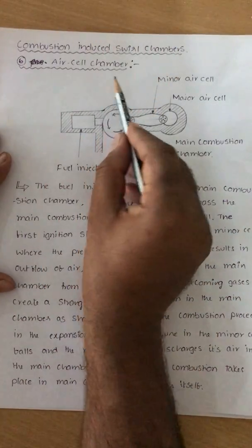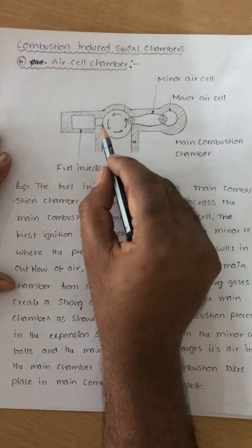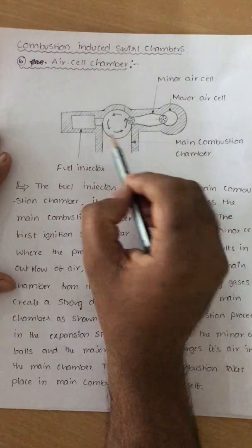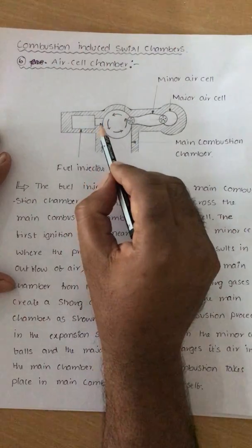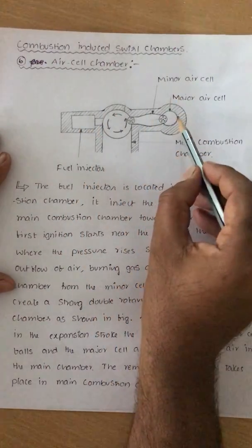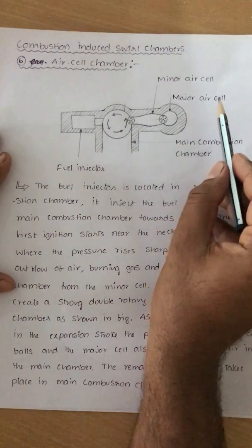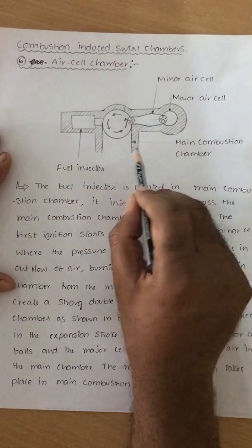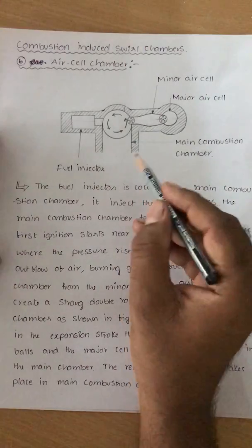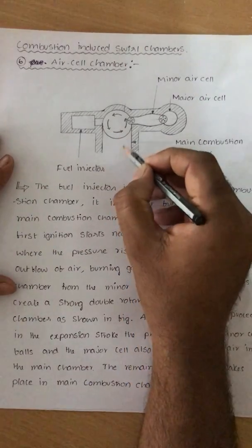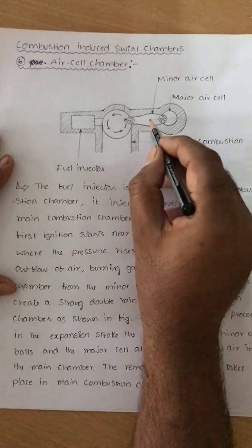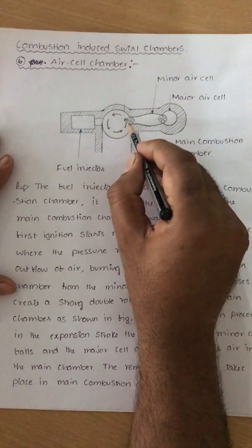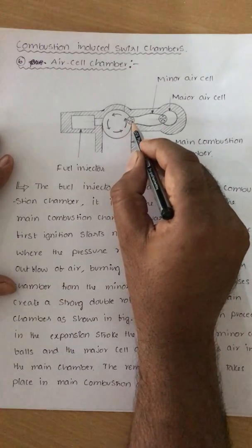In the air cell chamber, this is the cylinder head, cylinder, fuel injector, the minor cell, major air cell, and this is the main combustion chamber. During the compression stroke, the air enters into the minor cell and major cell through small-sized orifices.